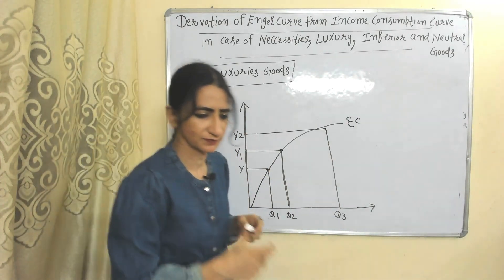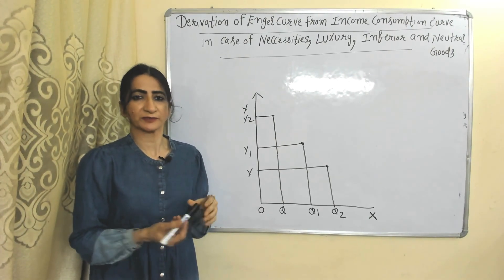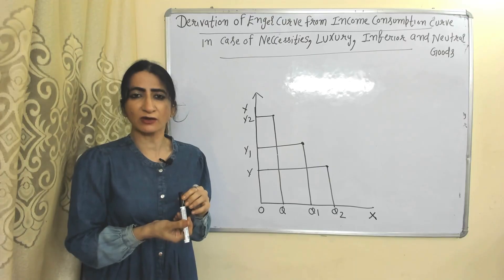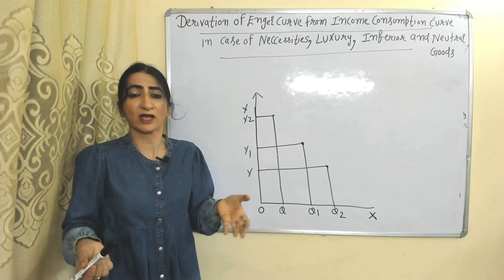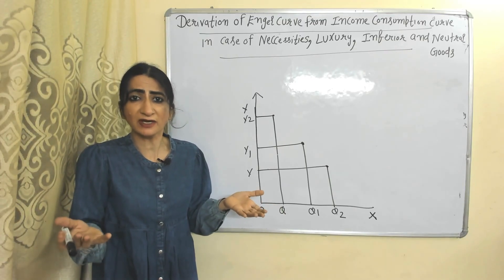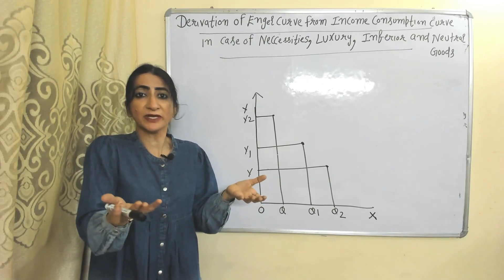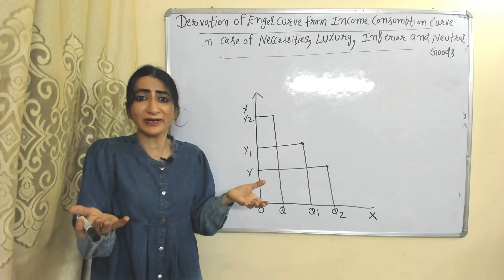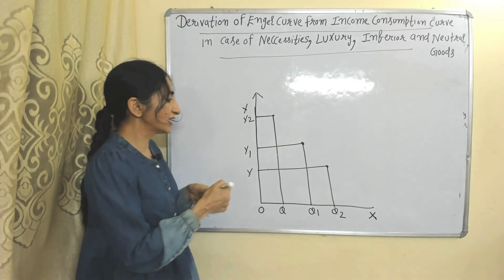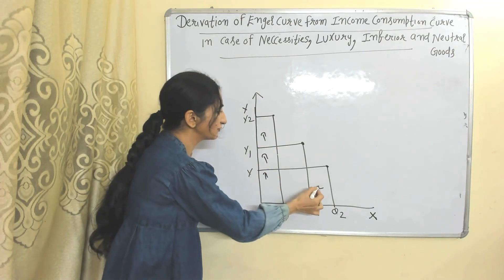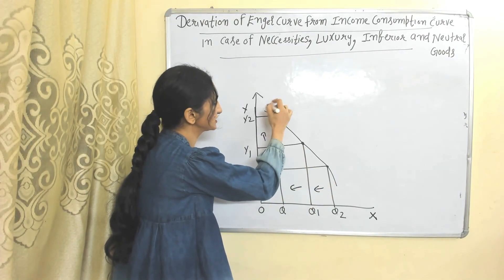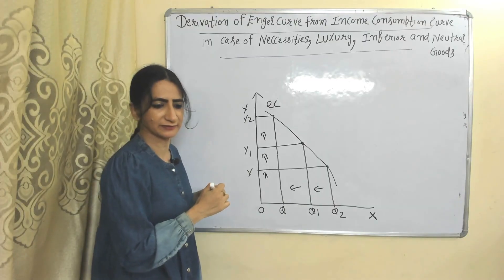Engel curve in case of inferior goods: as income increases, demand decreases. Obviously, as our income increases and we are becoming more rich, why should we buy inferior goods? Instead, we will buy superior goods, good quality goods, branded goods. So as income increases, demand for inferior goods decreases. Here you can see, as income is increasing, demand for inferior goods is reducing. When we join all these points, we get our Engel curve. Here you can see our Engel curve is backward bending.